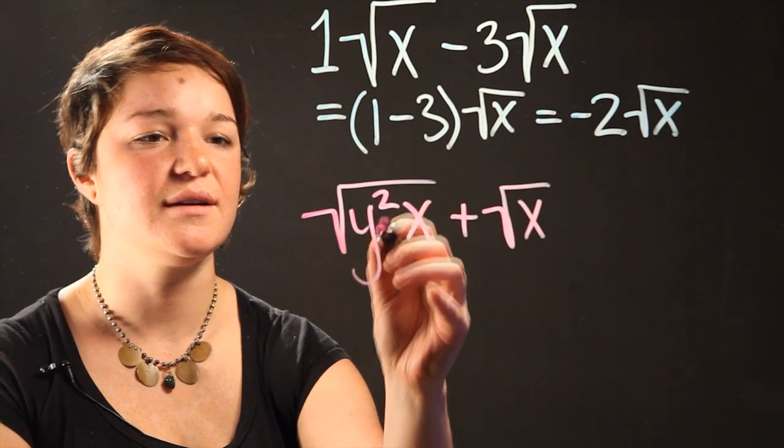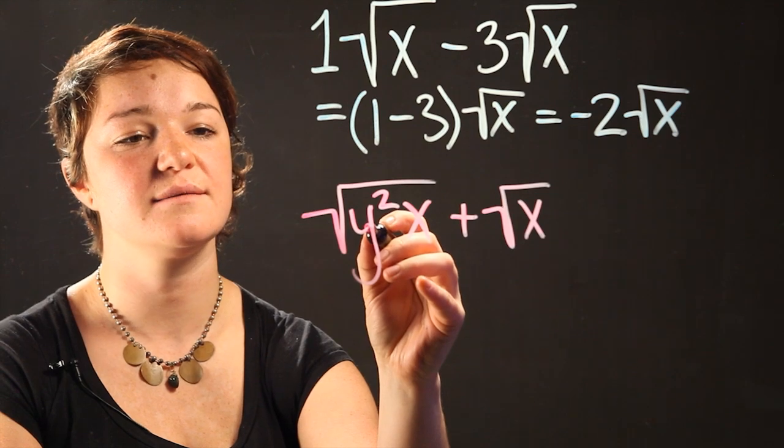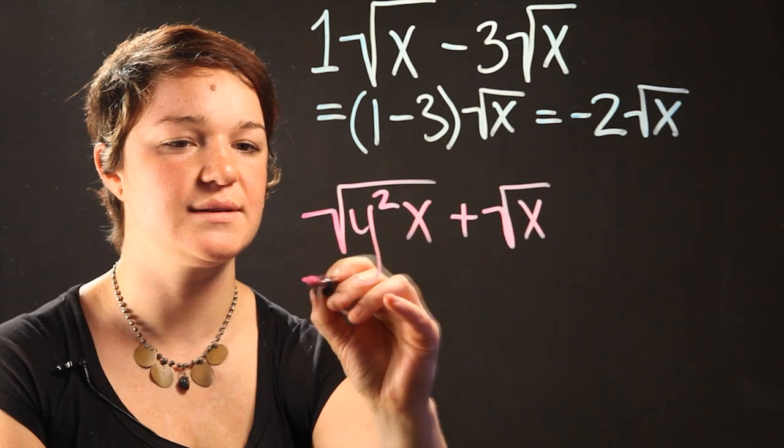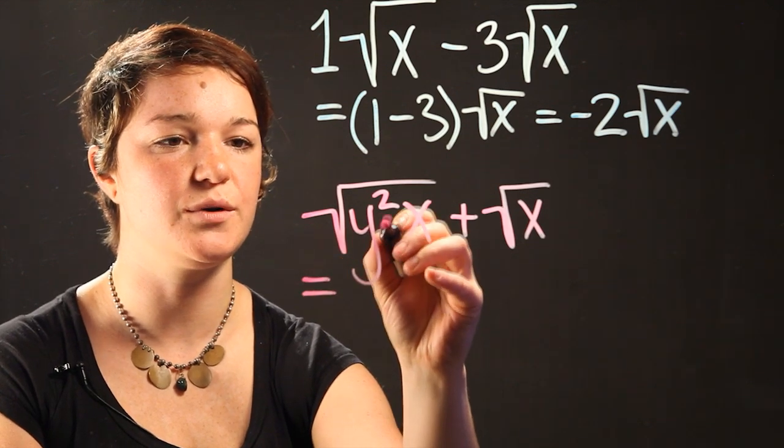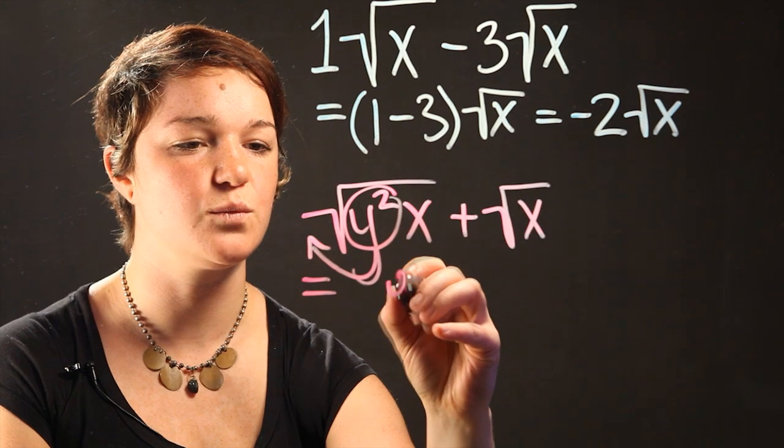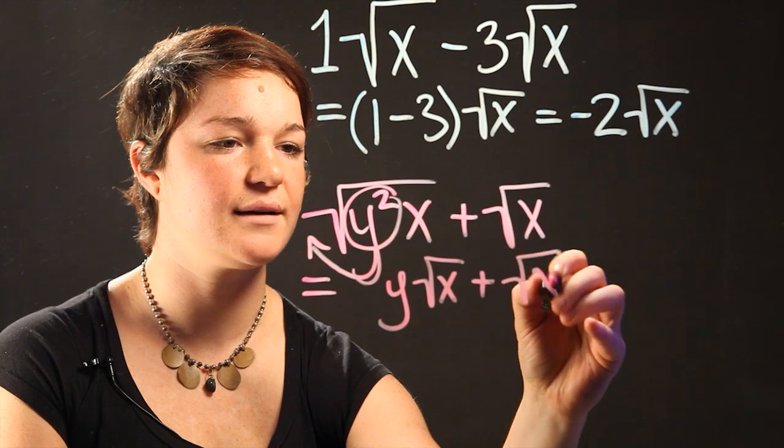This radical has a squared variable in it and therefore we can pull it out to make it more simple. We can turn this into, I'm going to pull the y squared out. So it's going to turn into y radical x plus radical x.